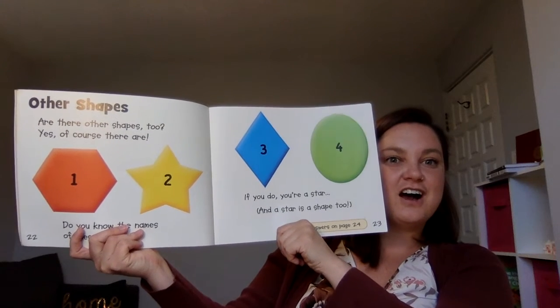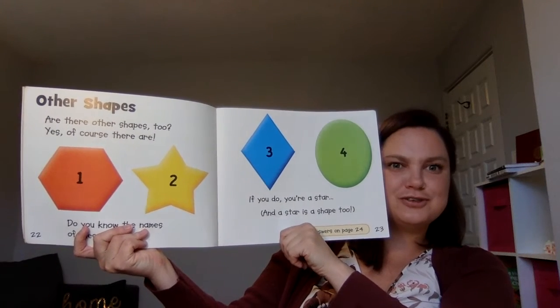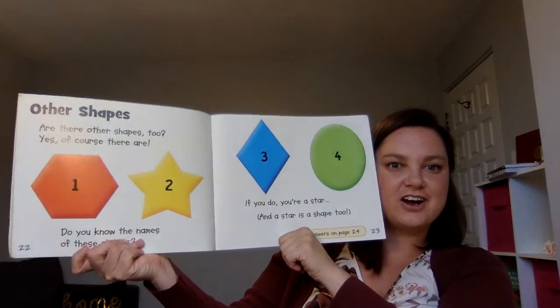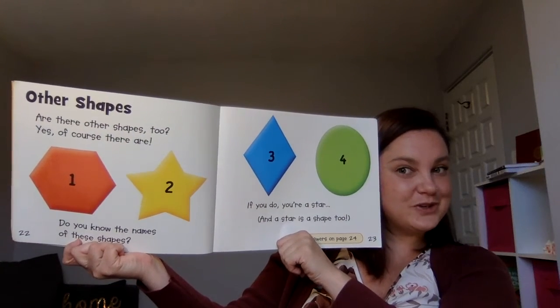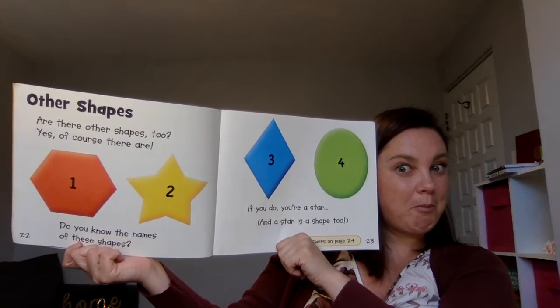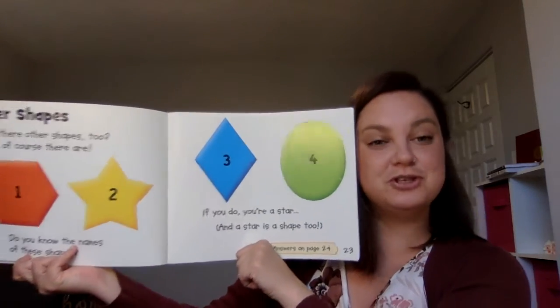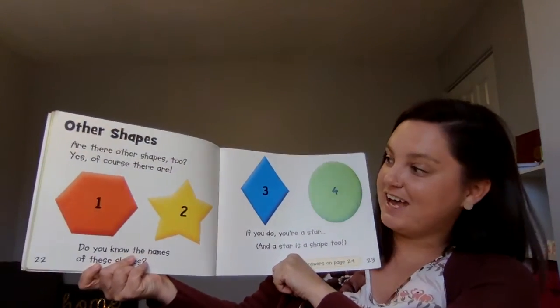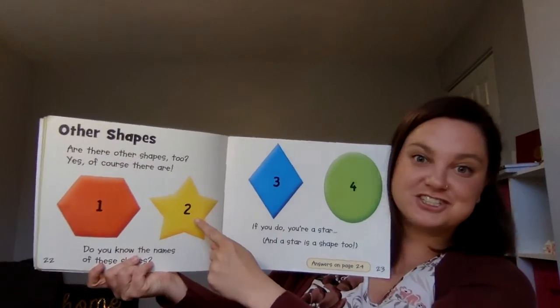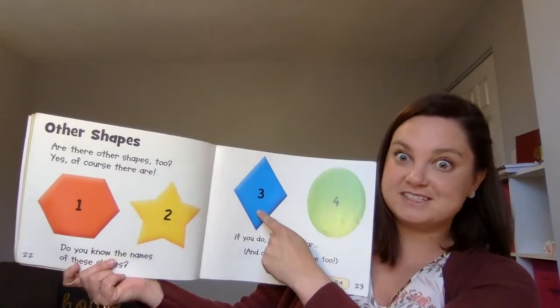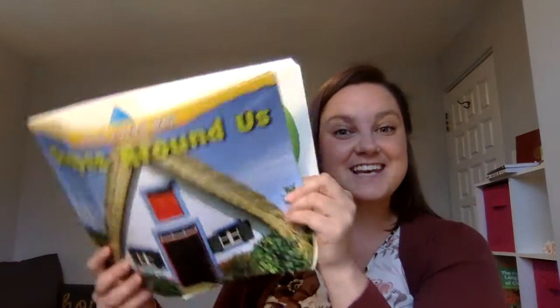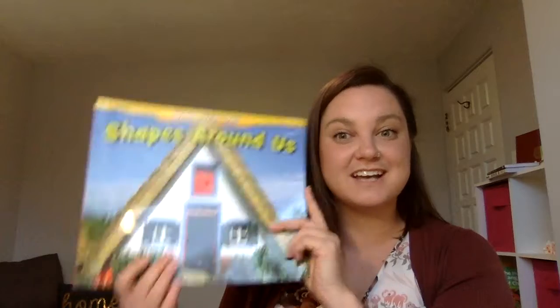Other shapes — are there other shapes too? Yes, of course there are! Do you know the names of these shapes? If you do, I'll give you a star — and a star is a shape too! You have a hexagon, a star, a diamond or a rhombus, and an oval. The end — Shapes Around Us. Now go on your shape hunt and see how many shapes you can find in your house!